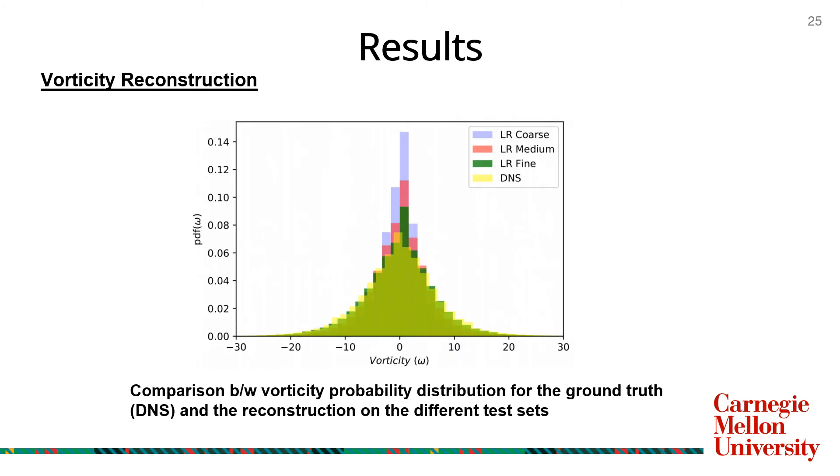Next, we plot the probability distribution functions of vorticity for the three datasets along with the DNS ground truth. The vorticity distribution on the LR fine dataset almost exactly overlaps with the ground truth values. The reconstruction on the LR medium dataset is also decent while the probability distribution on the LR coarse dataset is slightly concentrated towards the origin, which was expected given the highly filtered nature of the input data.